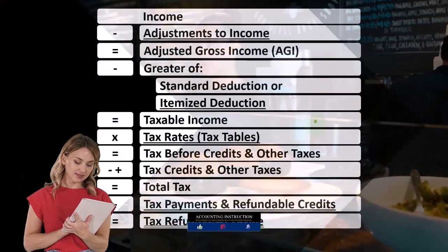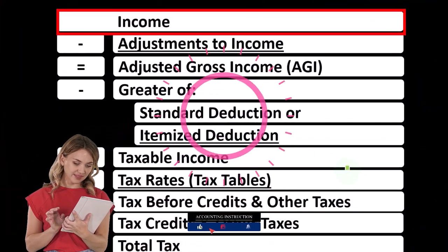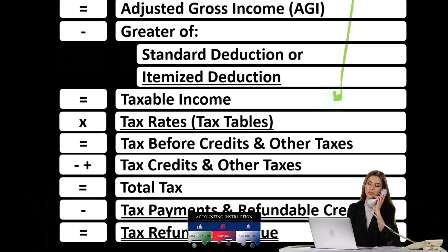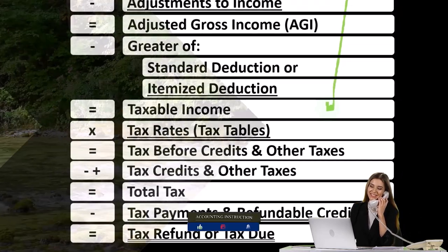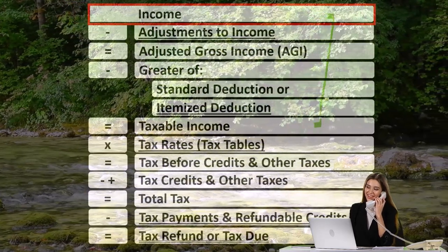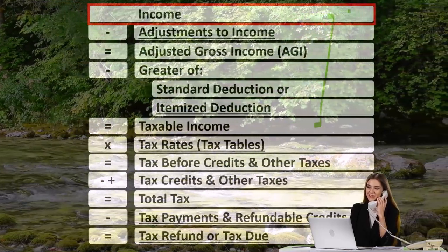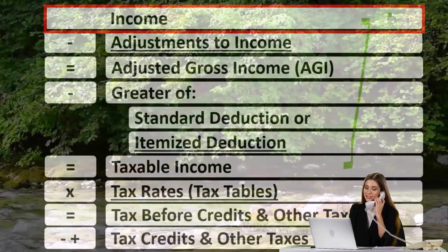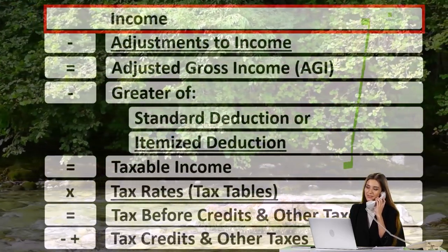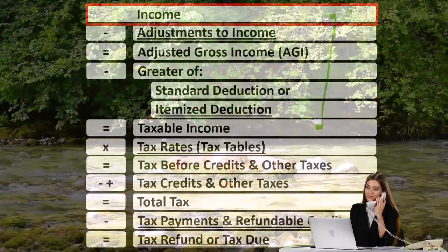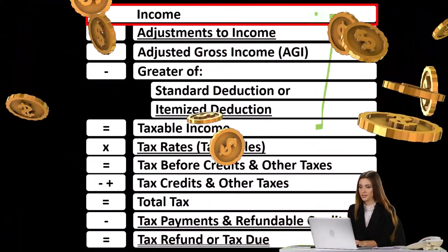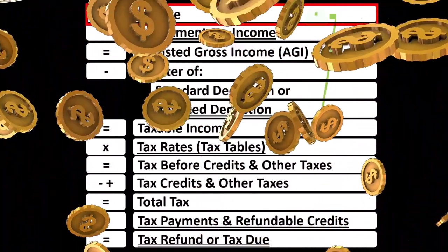Looking at the income tax formula, we're focused on line one, that being income. Remembering that the first half of the income tax formula is in essence an income statement — although it's just an outline, a scaffolding — with many other forms and schedules flowing into these line items. With the income line we're focused on now, we're thinking about the Schedule C, which is in essence an income statement in and of itself, having income minus expenses or business deductions, and the net income is what flows through to the income line item in our income tax formula.